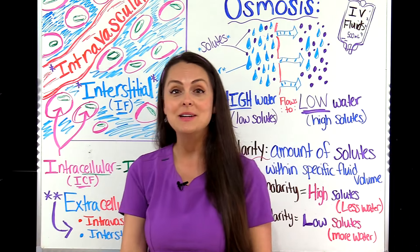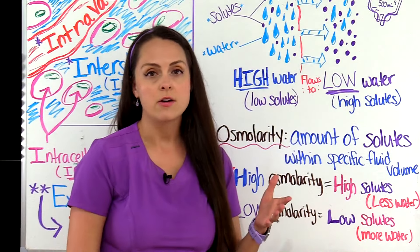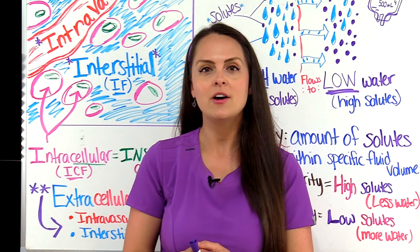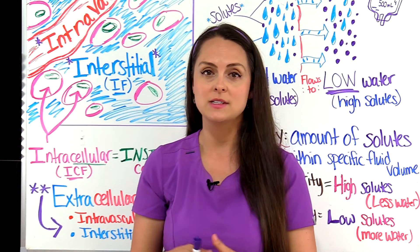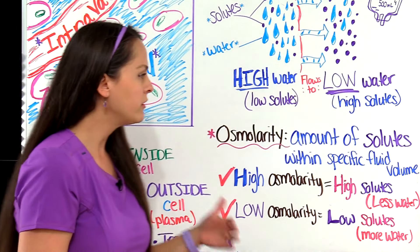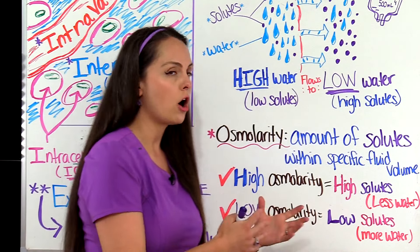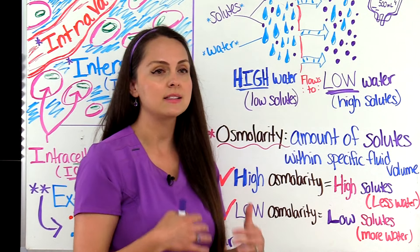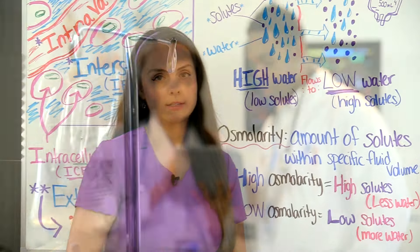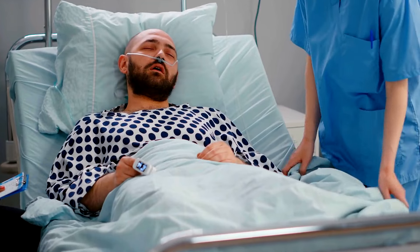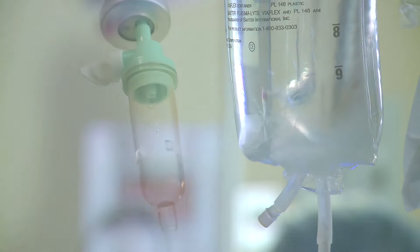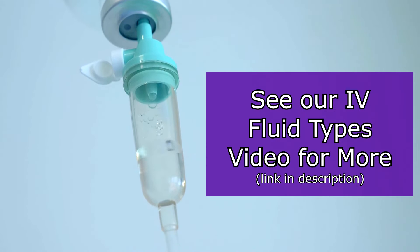We can administer that fluid to the patient's intravascular system. Depending on how much sodium and chloride is in that fluid will determine how osmosis is affected in the extracellular and intracellular compartments. That leads us to osmolarity — the amount of solutes within a specific fluid volume, or the total solute concentration per liter of solution. Depending on an IV fluid's osmolarity will determine how osmosis shifts fluid around compartments. We can term fluids as having a high osmolarity — meaning many solutes and less water — or a low osmolarity, meaning fewer solutes and more water.